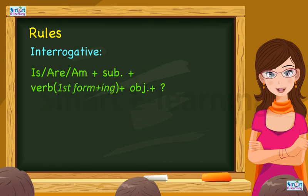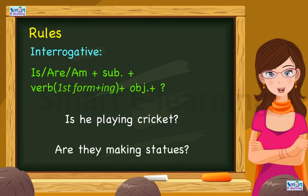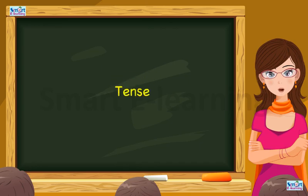Interrogative: is, are, am plus subject plus verb first form plus ing plus object plus question mark. Is he playing cricket? Are they making statues?